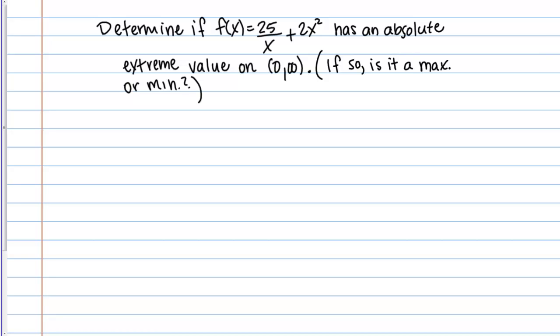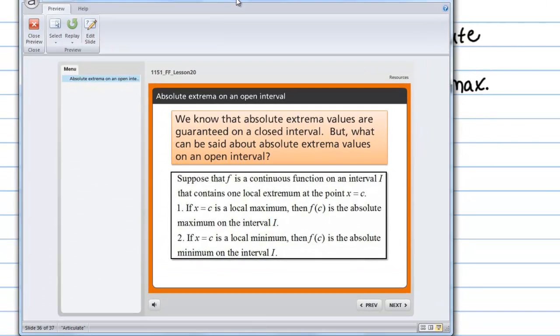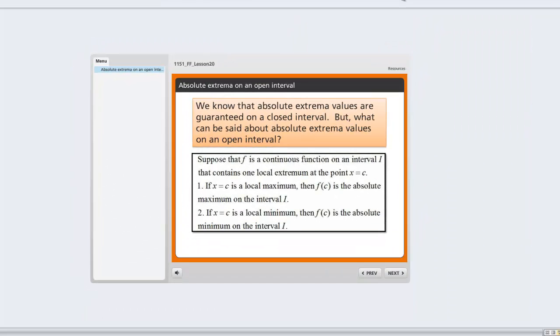Hopefully you just read the following theorem about absolute extrema, which says that if f is a continuous function on some interval, and that interval contains one local extremum, so either an absolute maximum or an absolute minimum, but just one absolute extrema, then if that point x equals c is a local max, then that is the absolute maximum. And if it's a local min, then that is the absolute minimum. So that's the theorem.